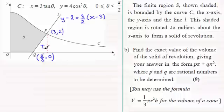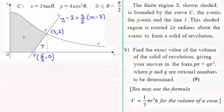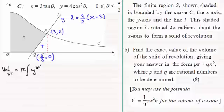What I'm going to do is work out the volume of S and T together when rotated about the x-axis, and then subtract the volume of the cone generated by T. That will give me the volume generated by S alone. The volume of the combined area S+T when rotated about the x-axis is given by π times the integral of y² with respect to x, going between the limits 0 and 3.